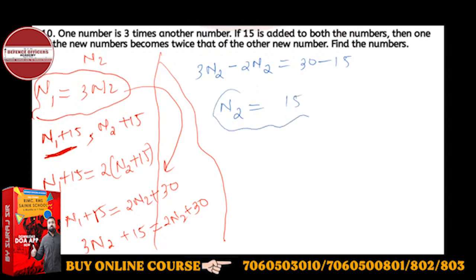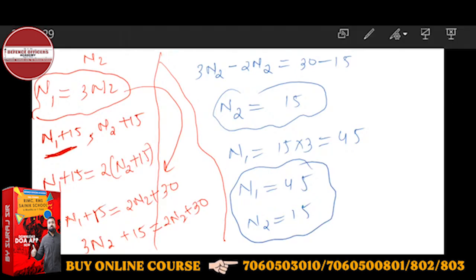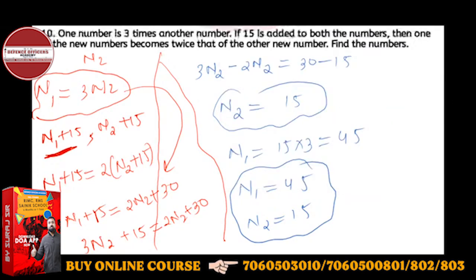So n2 will come to be 15. n2 plus 15 equals 30, so n2 equals 15. And n1 is thrice of n2, so 15 times 3 will be 45. Therefore, n1 equals 45 and n2 equals 15.